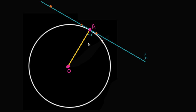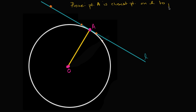The first step is to prove that point A is the closest point on line L to the center of our circle, point O.